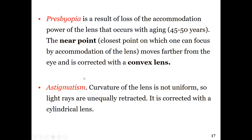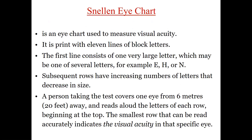Astigmatism can also result from changes or uneven curvature of the lens or cornea. When the curvature is not uniform, this results in blurry vision and may even cause duplication in vision. Astigmatism is corrected with cylindrical lenses.